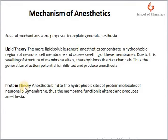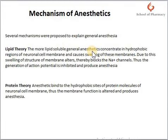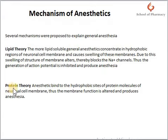The second theory is the protein theory. After the lipid theory, the Meyer-Overton theory was proposed, which correlated the potency of general anesthetics with their lipid solubility. Meyer and Overton stated that the higher the value of the partition coefficient of the compound, the greater will be its general anesthetic property. The protein theory states that anesthetics bind to the hydrophobic site of protein molecules of the neuron cell membrane, thus altering membrane function and producing anesthesia.